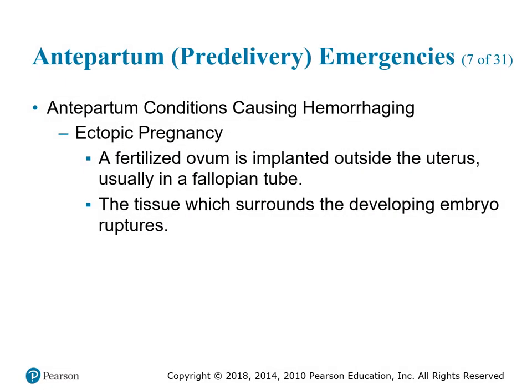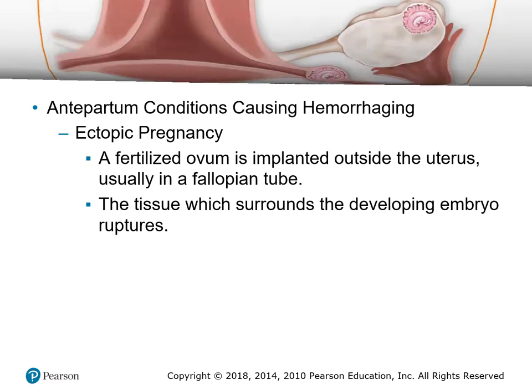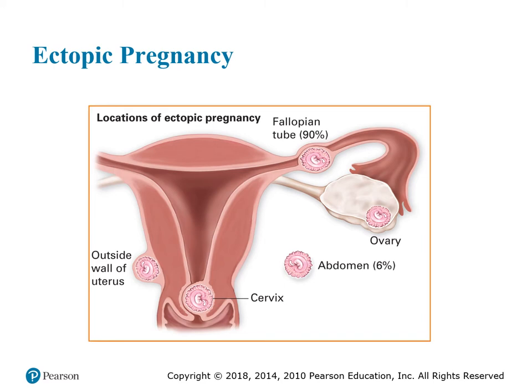Another cause of hemorrhage is ectopic pregnancy, where a fertilized ovum is implanted outside of the uterus, usually in the fallopian tube. The tissue surrounding the developing embryo then ruptures. About 90% occur in the fallopian tube, though some occur outside of the uterine wall. The ovum will find blood vessels and may also attach itself to the intestines in some occasions.